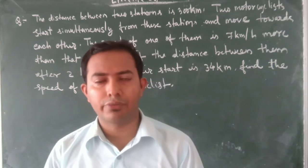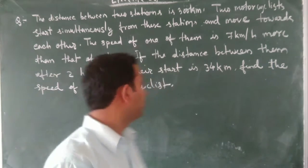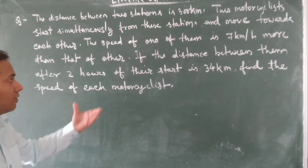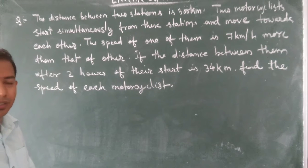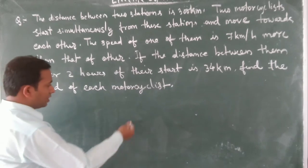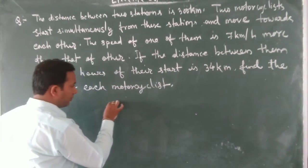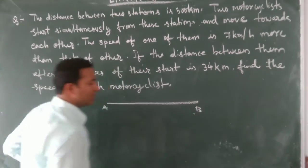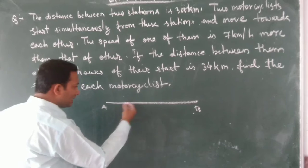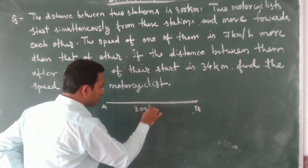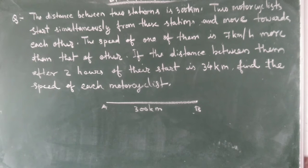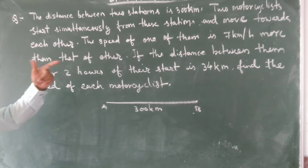We have a problem based on linear equations. The distance between two stations A and B is 300 kilometers.